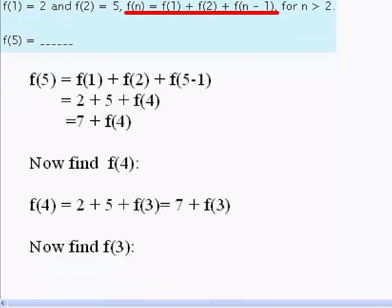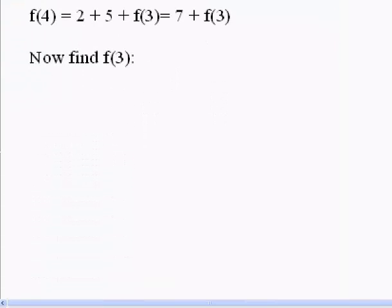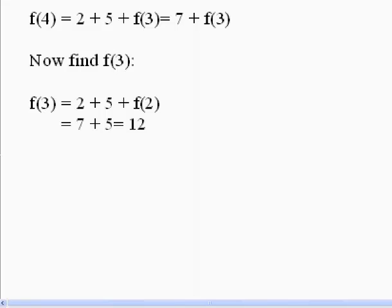Again, we will be using the generic equation, and we find that f(3) = 2 + 5 + f(2). This equals 7 + 5, which equals 12. Now that we know that f(3) = 12, we can solve f(4).